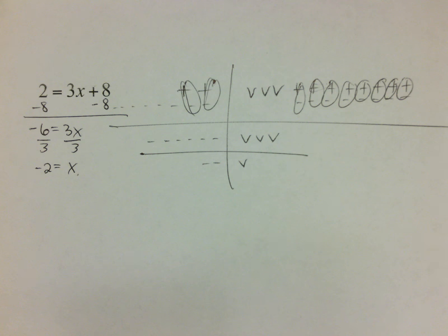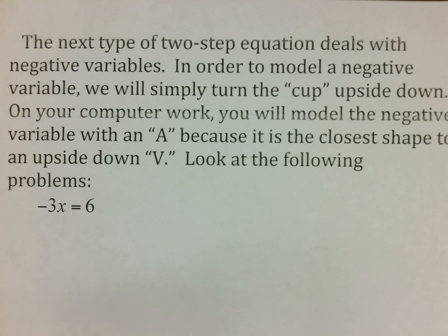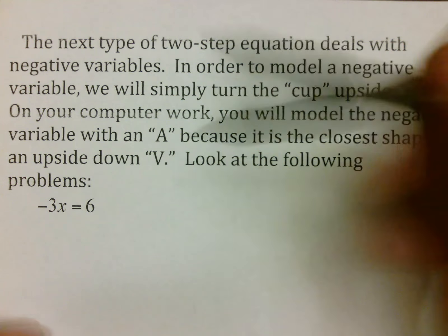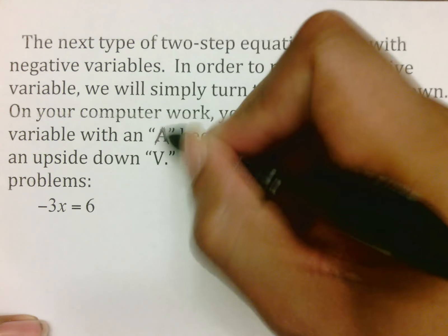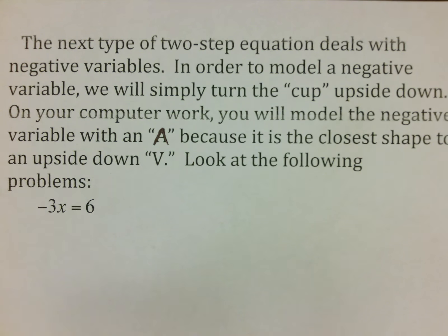There is another modeling question that deals with negative variables. In order to model a negative variable, we're going to simply turn the cup upside down. Of course there is no upside-down V on a computer, but we will use the letter A because if you look at the A it has an upside-down V shape to it. So the letter A is your upside-down cup — it represents your negative variable.